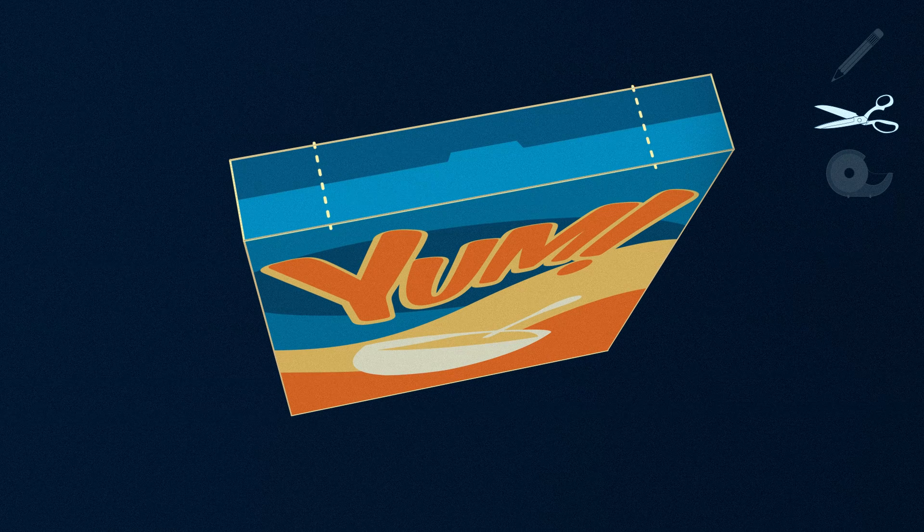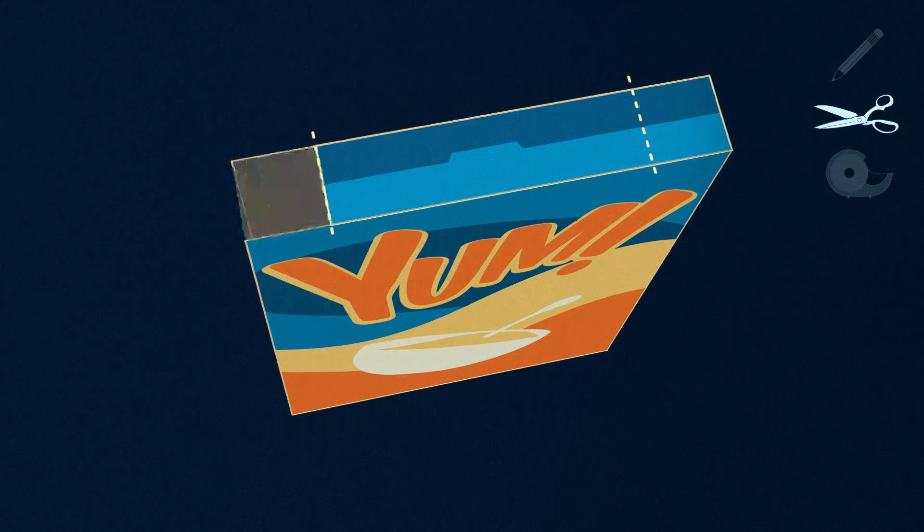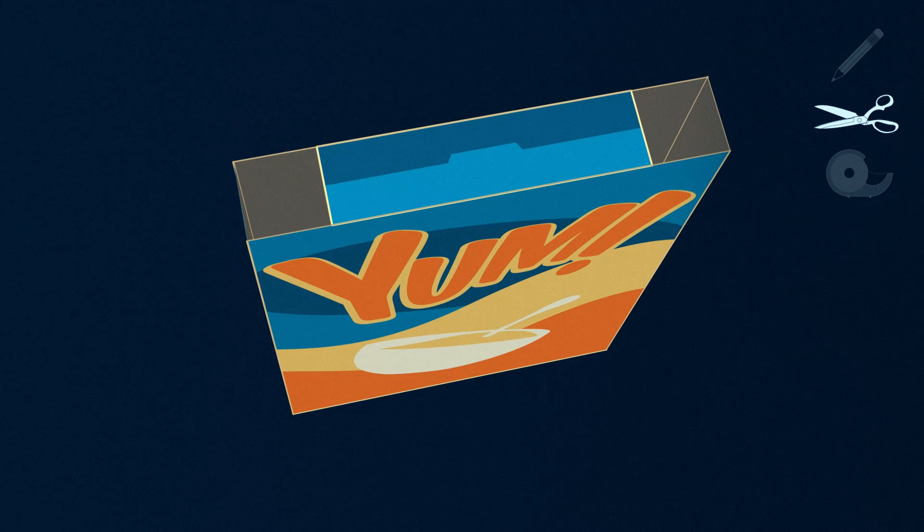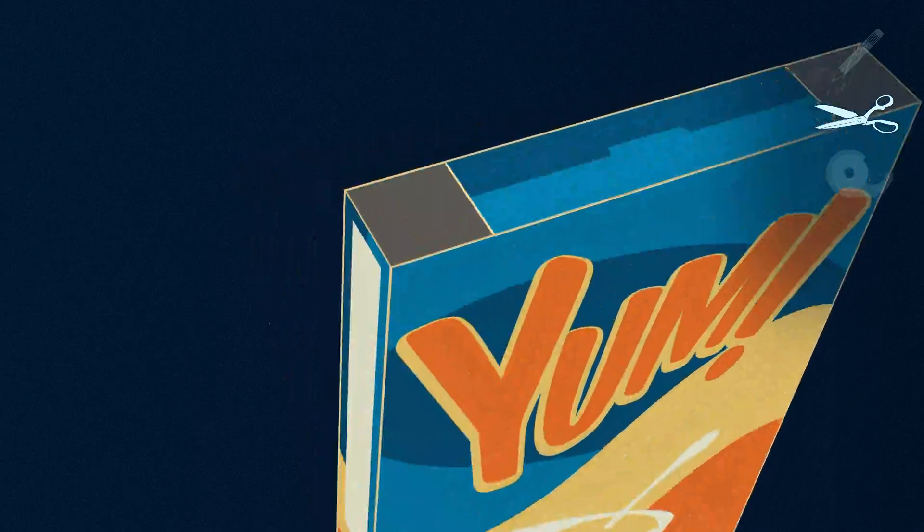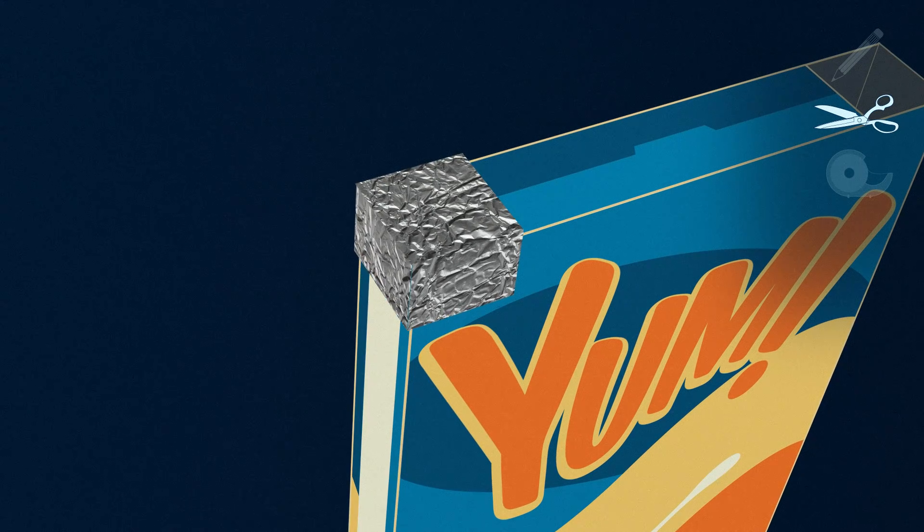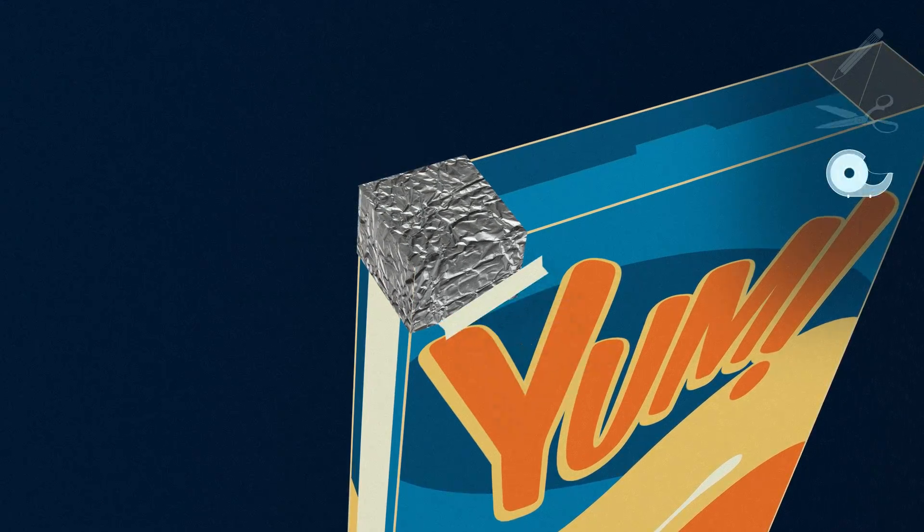Step 3: Cut two rectangular holes into the top left and right of the box. Step 4: Cut a piece of aluminum foil to cover the left hole and tape in place.